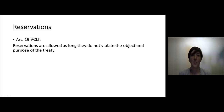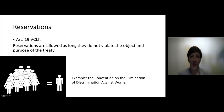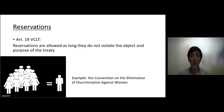Reservations are also arranged in the VCLT. Article 19 of the VCLT says that reservations are allowed as long as they do not violate the object and purpose of a treaty. For example, with the Convention on the Elimination of Discrimination Against Women, CEDAW, a couple of states made the reservation that they did not wish to be bound by the article saying that women could give nationality to their children. The problem is that if a child is born and the father is out of the picture, the child becomes stateless. Yet many states said they do not recognize this right for women to transfer nationality — and you can ask yourself whether that is a violation of the object and purpose of the treaty.